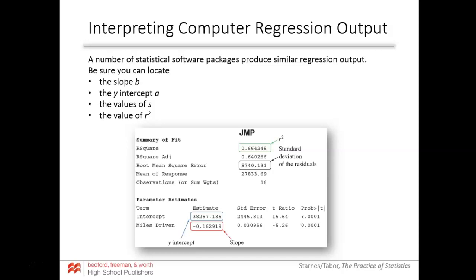Here's a different type of software — JMP. You'll see obvious things: at the top it says R-squared, that means r-squared. Underneath there it says Root Mean Square Error — that's a fancy way of saying standard deviation of the residuals, so that's s. Towards the bottom under parameter estimates, the intercept is clear — that's the y-intercept. Below that it says 'miles driven estimate' — that's the slope, the coefficient in front of the explanatory variable.